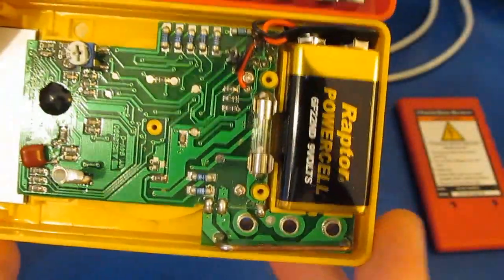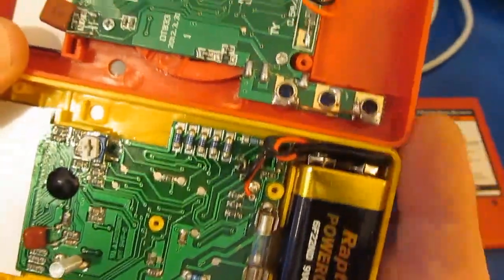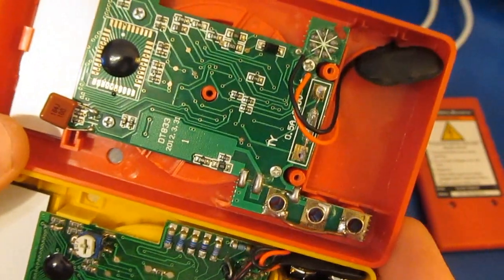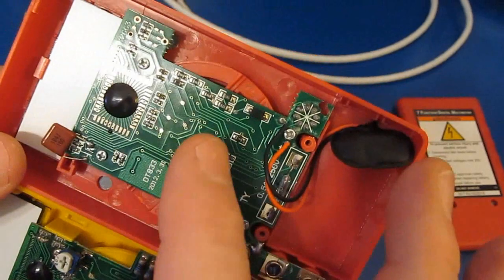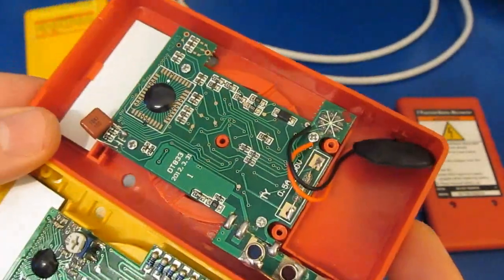You can see that over time they've continued to reduce the manufacturing cost of these meters. Comes at a price of course. Now the meter will no longer survive 2000 volts.